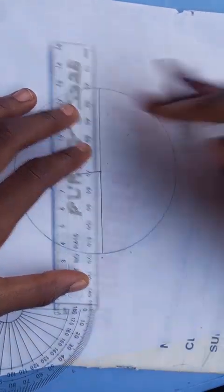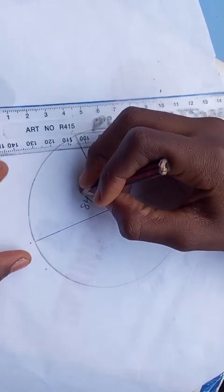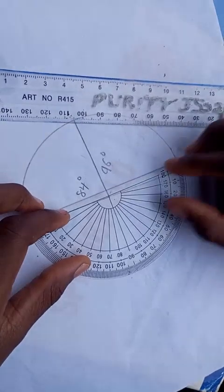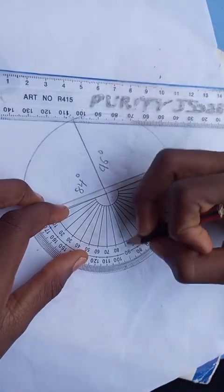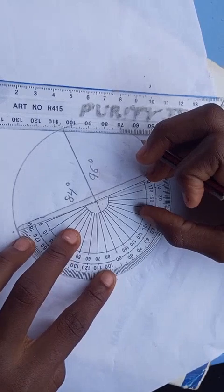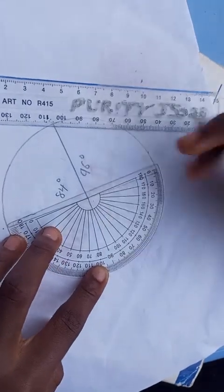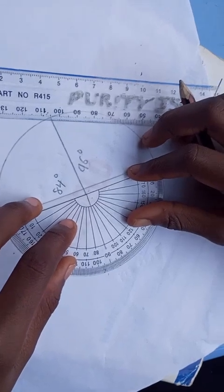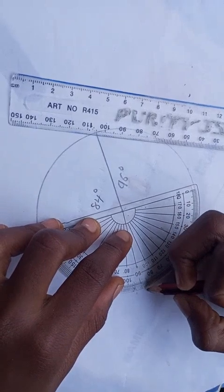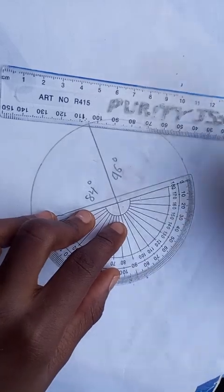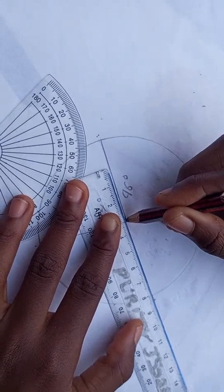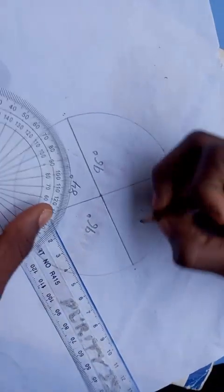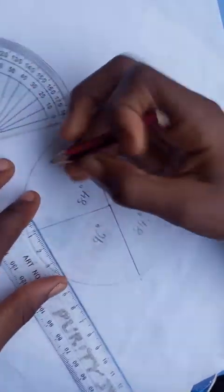So this is 84 degrees. We go for 96. This is 86, this is 80, 90, make it straight, measure to be straight. The center, this is 95 and this is 96. Use your ruler to draw a straight line. So this is 96 degrees.